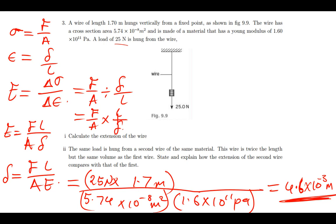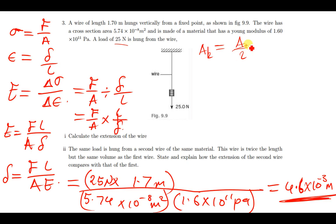We know that the cross-sectional area of the second wire — since the wire is twice the length but has the same volume — is going to be equal to half that of the first wire. So area₂ = ½ × area₁.